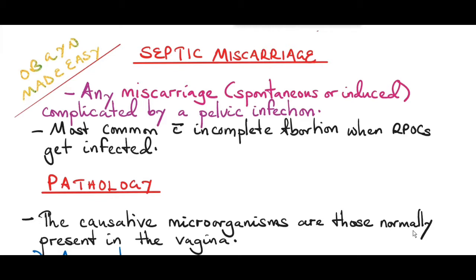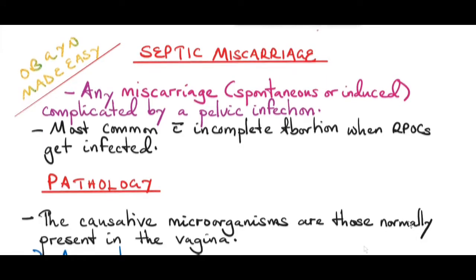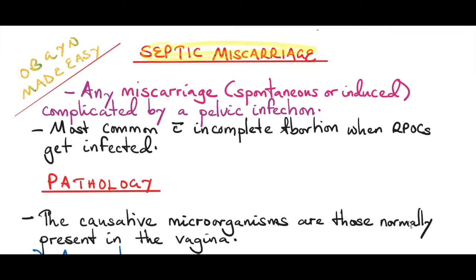This is the last discussion in our topic of miscarriages. A septic miscarriage is any miscarriage, either a spontaneous or induced miscarriage, complicated by a pelvic infection. It is most common when an incomplete abortion happens, when the retained products of conception get infected.